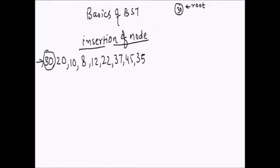Now I take 20, my next node. I go down the tree which is already created as root and I check what is the best position for 20 in this tree, in order to satisfy the BST property — that is, all the nodes on the left hand side are smaller and all the nodes on the right hand side are greater. Since 20 is less than 30, it has to be on the left hand side, so we put 20 as the left child of 30.